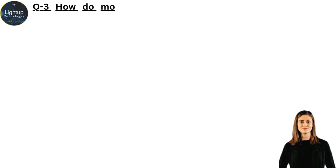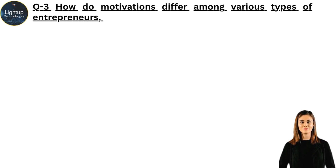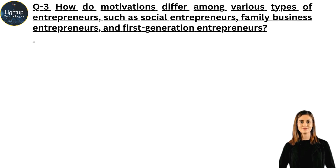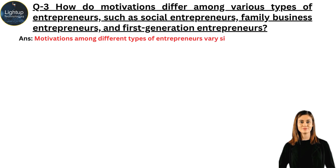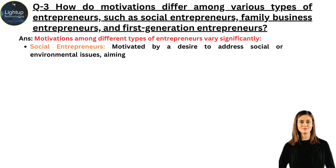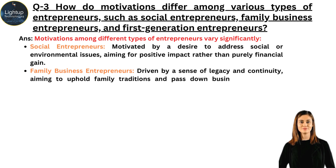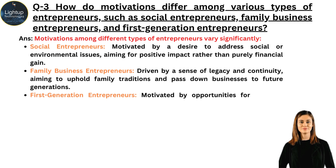How do motivations differ among various types of entrepreneurs, such as social entrepreneurs and family business entrepreneurs? Social entrepreneurs are motivated by a desire to address social or environmental issues, aiming for positive impact rather than purely financial gain. Family business entrepreneurs are driven by a sense of legacy and continuity, aiming to uphold family traditions and pass down businesses to future generations. First-generation entrepreneurs are motivated by opportunities for personal success and financial independence.